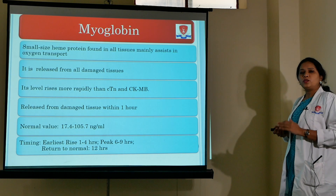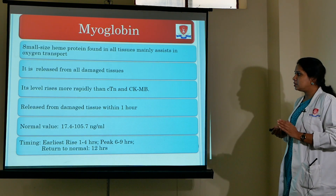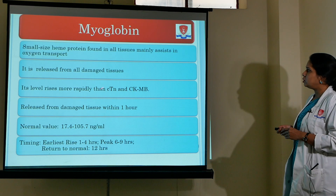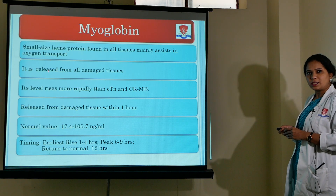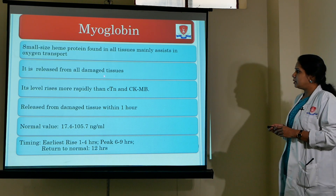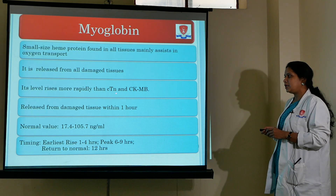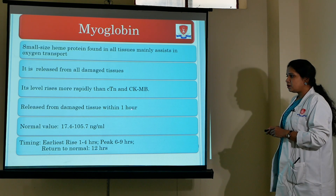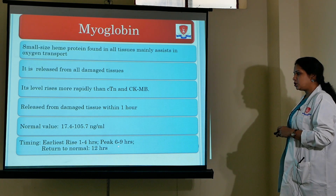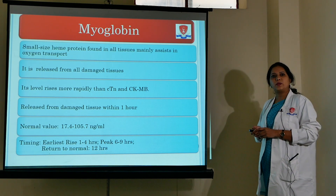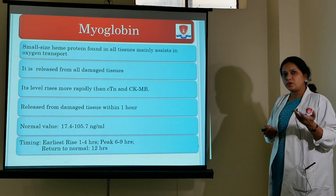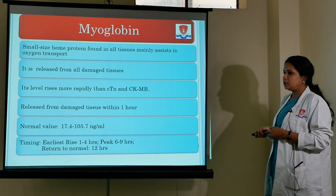Myoglobin, though detected early, has less diagnostic importance compared to troponin and CKMB. It is a small-sized heme protein found in all tissues and assists mainly in oxygen transport. It is released from all damaged tissues; its level rises more rapidly than troponin and CKMB — released within 1 hour, with normal values of 17 to 105. It peaks in 6 to 9 hours and returns to normal within 12 to 24 hours, making it diagnostically relevant only within that window.